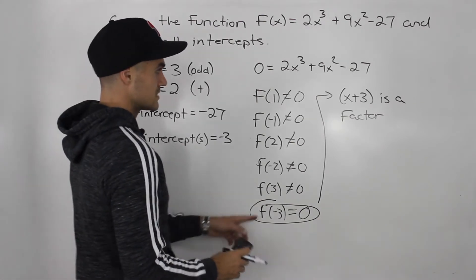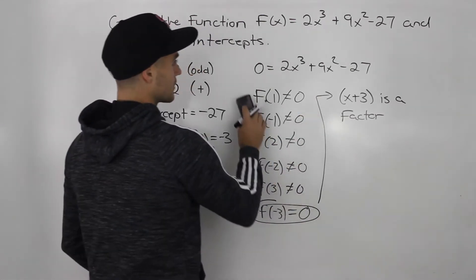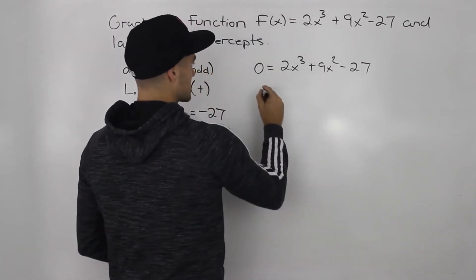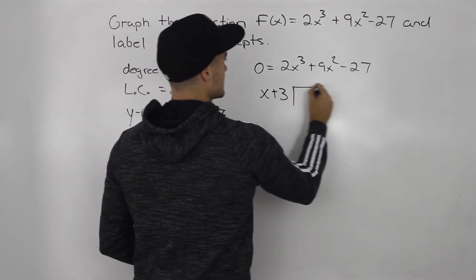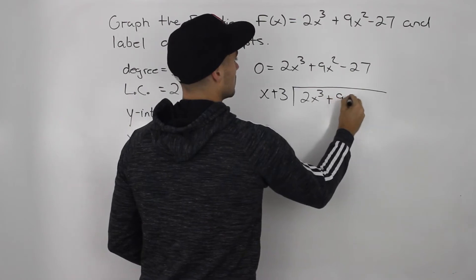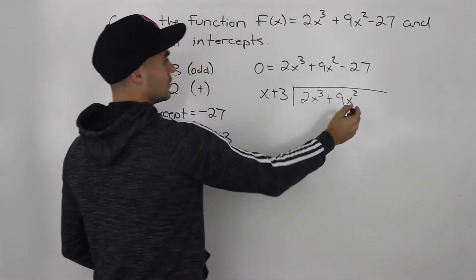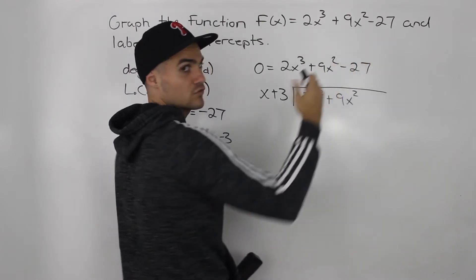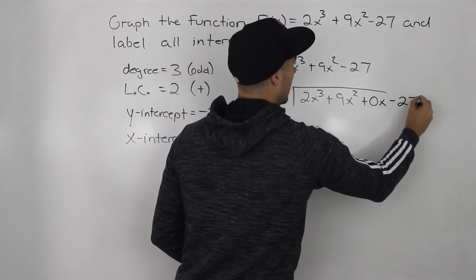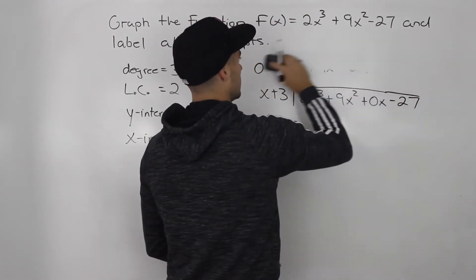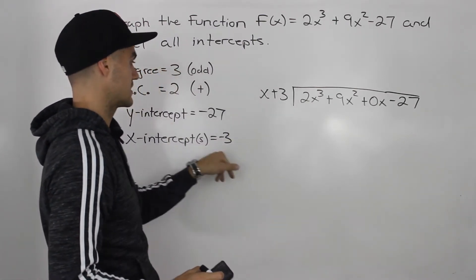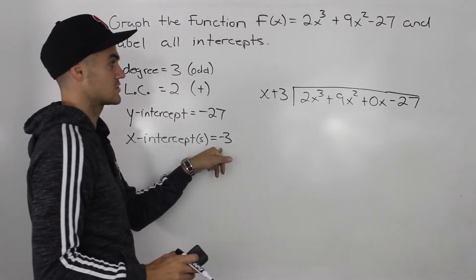So what we can do now, since we know that x + 3 is a factor, we can take that factor, x + 3, and see how many times it goes into that function that we're given. 2x³ + 9x². Notice how there's no coefficient for x, so we would put 0x here, a placeholder, minus 27. So now we're doing long division with that factor that we found.